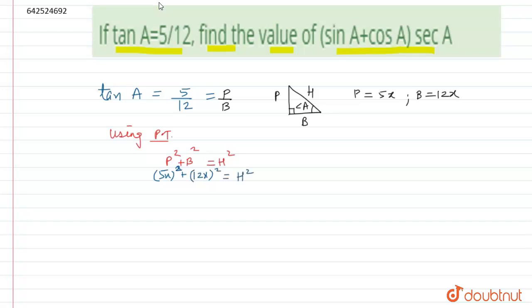So perpendicular square here is 5x whole square plus base square is 12x whole square equals to H square. So 5x whole square will be equal to 25x square plus 144x square equals to H square.